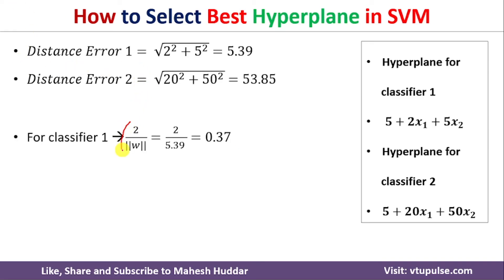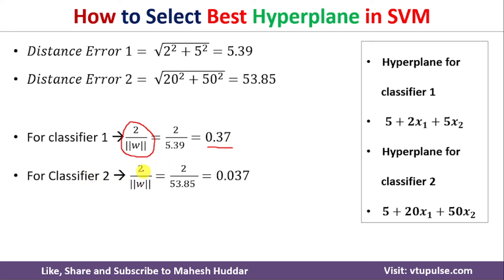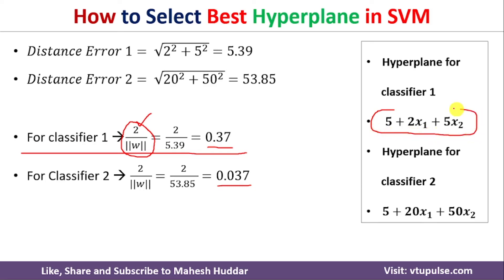Once you calculate the distance error for both hyperplanes, we need to calculate 2 divided by the length of that particular distance — that is 2 divided by ||W||. We need to select the hyperplane which gives the maximum value for 2 divided by ||W||. So 2 divided by 5.39 equals 0.37 for the first hyperplane. For the second hyperplane, 2 divided by 53.85 equals 0.037. Comparing these two values, the first hyperplane gives the maximum value for 2 divided by ||W||. So between these two hyperplanes, hyperplane 1 is the best hyperplane, and we should select this hyperplane to classify the new examples.